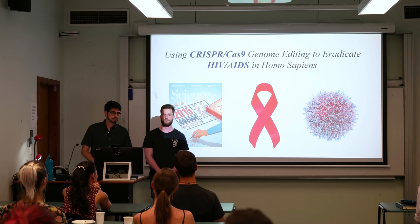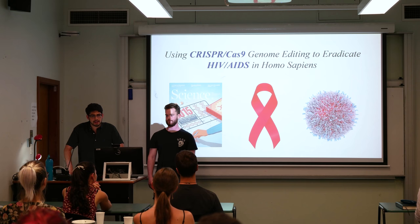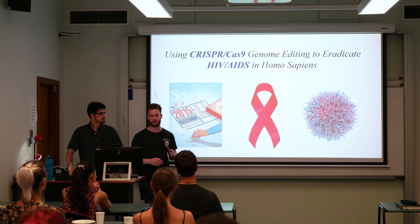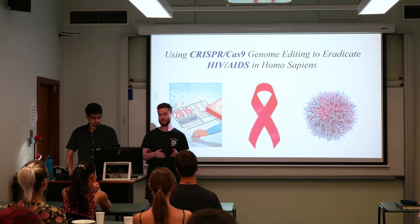Hey everyone, my name's Kieran and this is Peter and today we'll be talking about how you could use the CRISPR-Cas9 genome editing system to eradicate HIV from humans. Firstly we're going to look at what HIV and AIDS are, then we're going to look at the CRISPR-Cas9 system and how it could be applied for this disease, and then we're going to look at future research directions at the end.